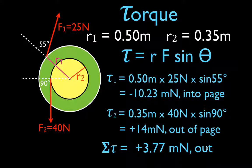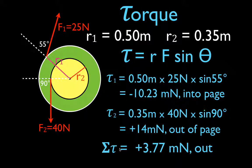To summarize: you look at the diagram, use the torque equation, identify r, F, and theta for each force, calculate the individual torques, and sum them to get the net torque and the resulting direction of rotation.